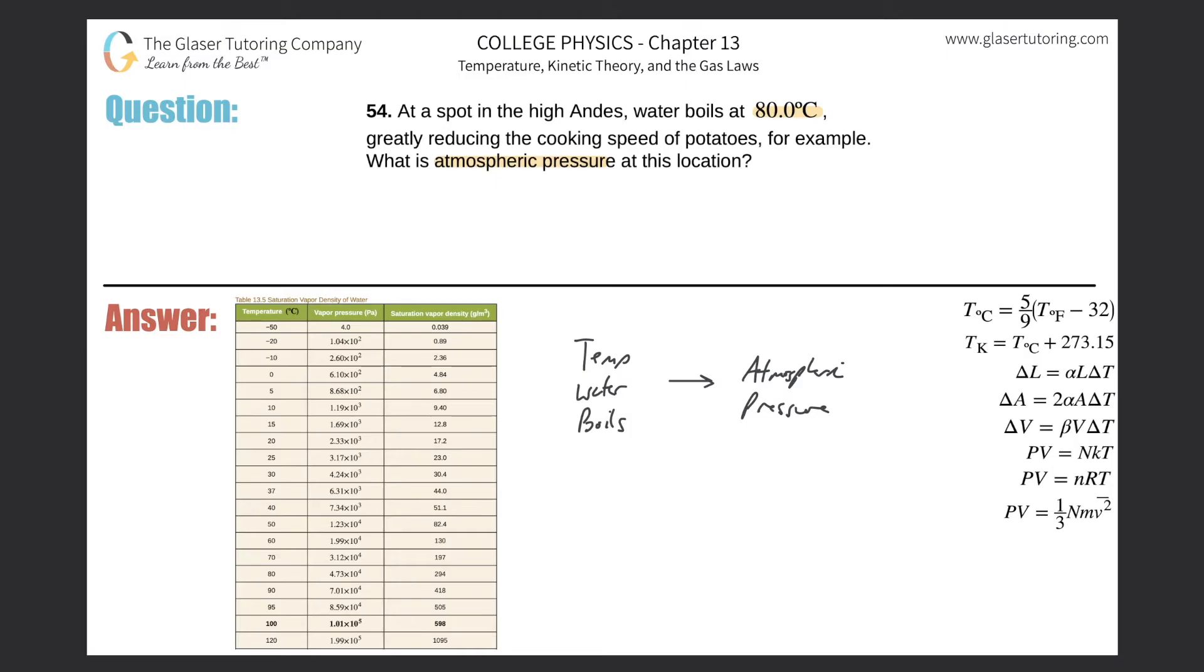That being the case, if I know that water now boils at, let's say, 80 degrees Celsius, I'm going to go to this part on the table. I'm going to realize when water boils at 80 degrees Celsius, its corresponding vapor pressure is then 4.73 times 10 to the fourth.